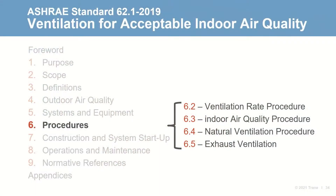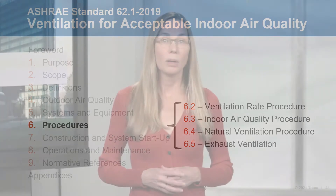Moving on to section six of the standard, it provides three alternative procedures that can be used to determine minimum outdoor air flow rates: the ventilation rate procedure, the indoor air quality procedure, and the natural ventilation procedure. It also includes exhaust air flow requirements in a separate section because these rates apply regardless of the design procedure used.